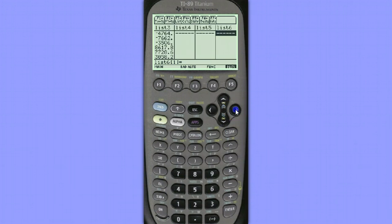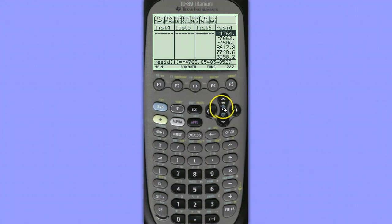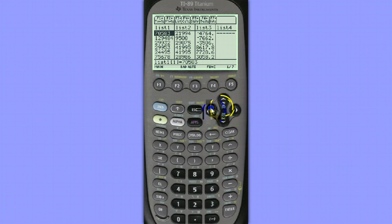Notice if I scroll over to the right we also have the residuals listed here in a list called resid off to the right after list 6. But I like seeing them in list 3 since it's right beside my variables, my xlist and my ylist.